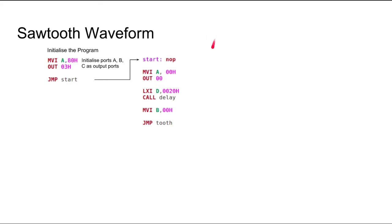Here, we would be outputting the lowest value on the input of the Digital to Analog Converter. Then, we would be calling a delay. Why would we be calling a delay? Because microprocessors are very fast. If we would be outputting values without generating any delay, the X coordinate of the outputted values would be too close and we wouldn't be able to distinguish those values on the oscilloscope. That's why we would be generating a delay, so that it would create a gap in the X coordinate of the outputted values on the oscilloscope.